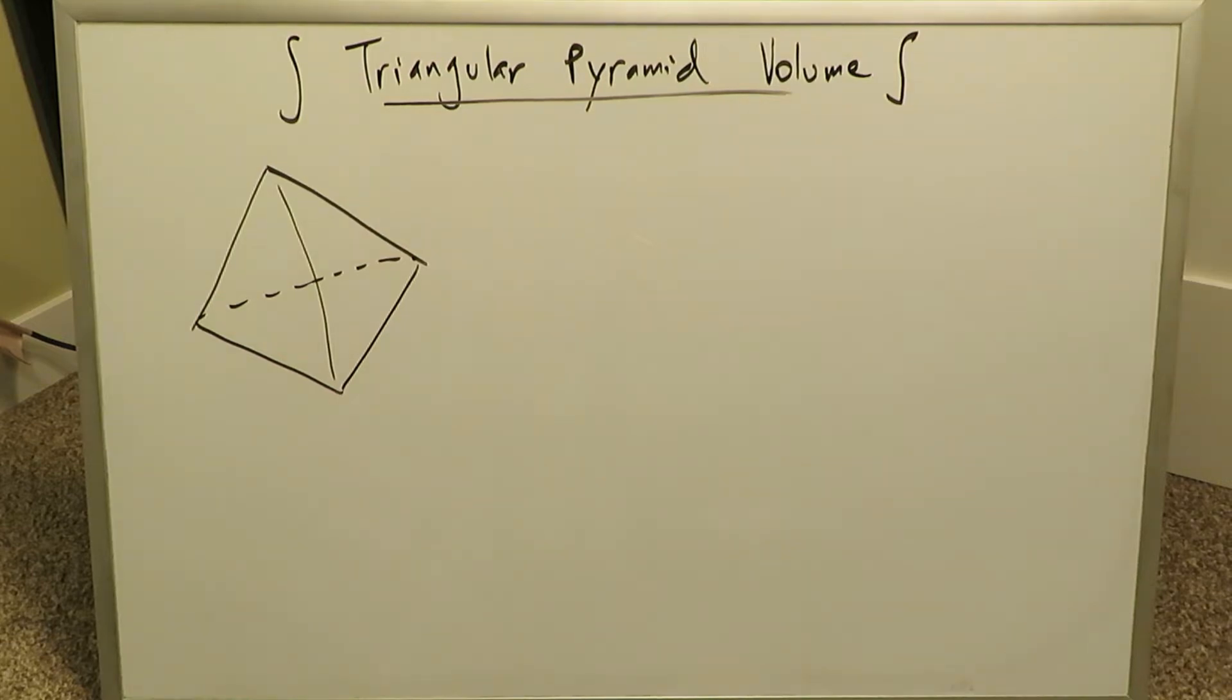Good evening. I am Mr. Ish. Let's shift gears a bit and come back to a volume derivation video. We're looking here at a triangular pyramid and looking at the formula for such a pyramid, a three-dimensional solid. It could be a tricky volume derivation.